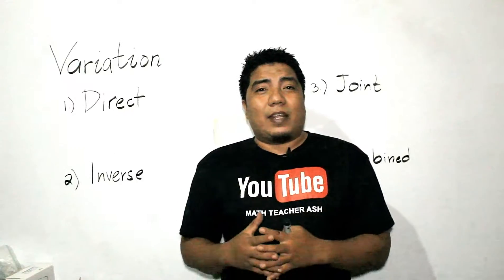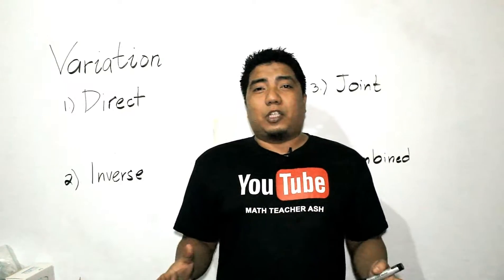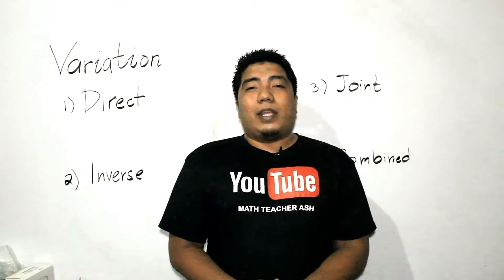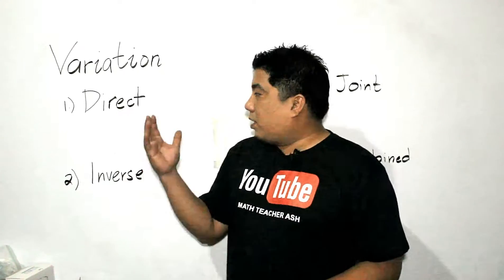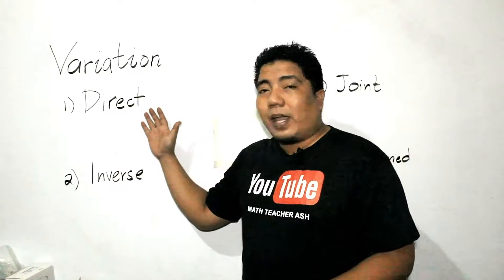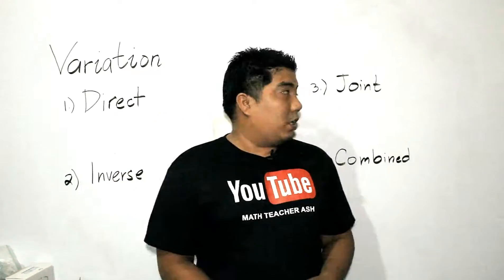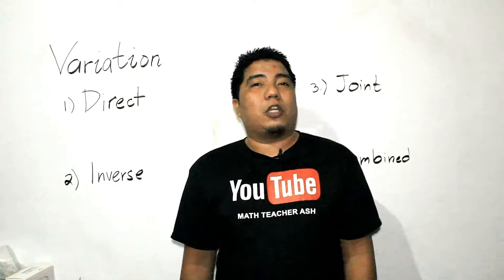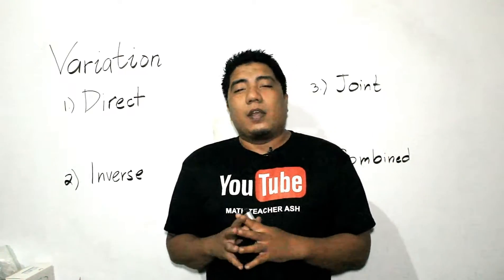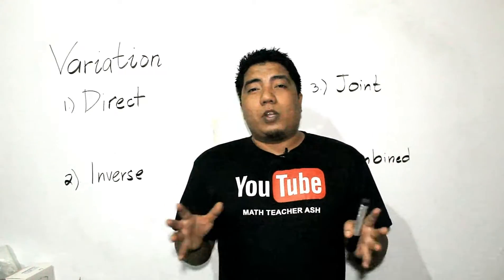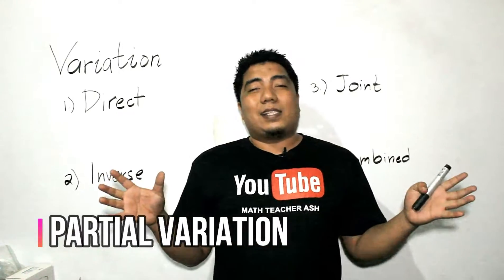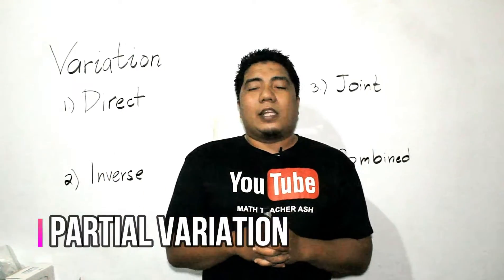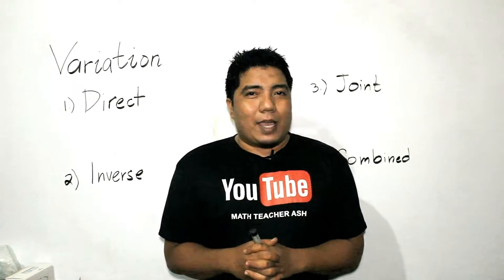There are four different types of variations introduced in the grade nine competencies: direct variation, inverse variation, joint variation, and combined variation. However, there is a fifth variation known as partial variation, but that is not included in the competency for grade nine mathematics.